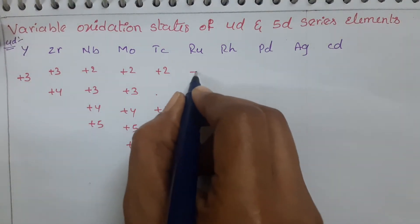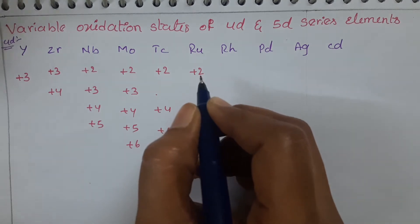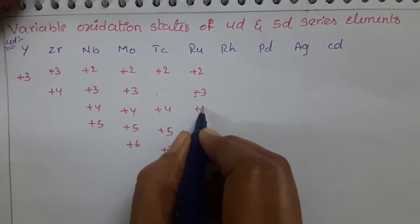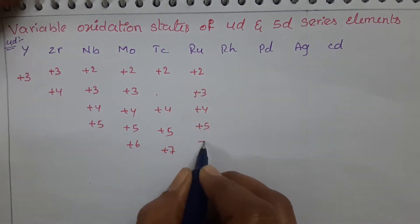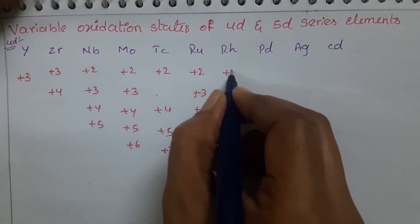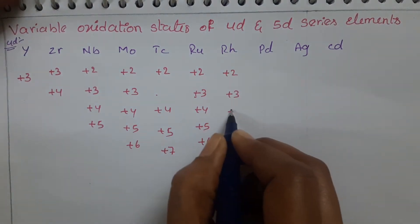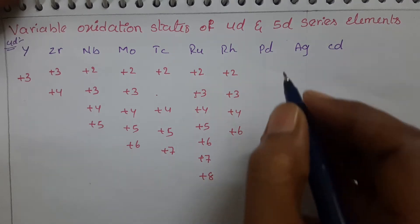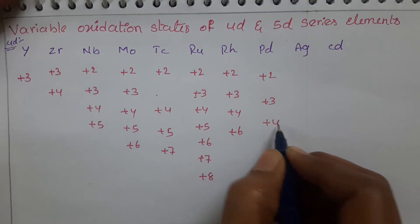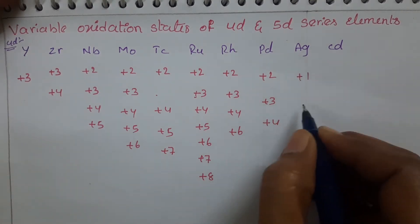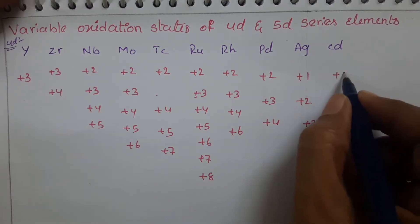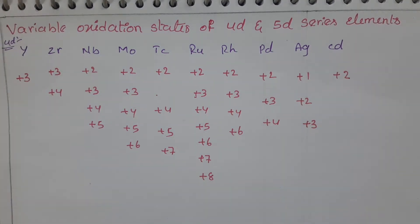Ruthenium is the element showing the highest oxidation state in this series — plus 2 to plus 8: plus 2, plus 3, plus 4, plus 5, plus 6, plus 7, and also plus 8. Rhodium can show plus 2, plus 3, plus 4, and also plus 6. Palladium can show plus 4 oxidation states. Silver can show plus 1, plus 2, and plus 3 oxidation states. And cadmium can show plus 2 oxidation states.